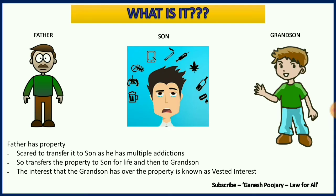You also need to observe that there is a timeline which will definitely happen. This is not a contingent aspect — this is going to happen. The son is going to die; it is not like the son is never going to die. After the son's death, the grandson will get the property. That is a sure, certain event which must happen.